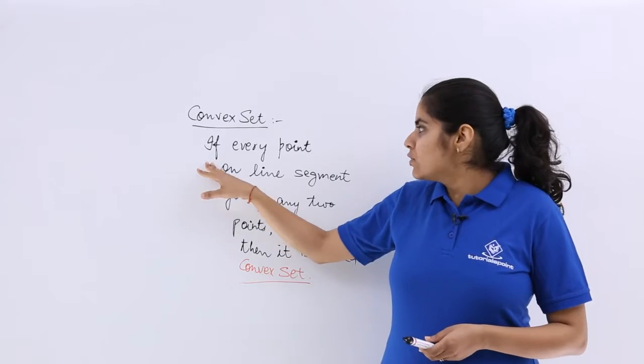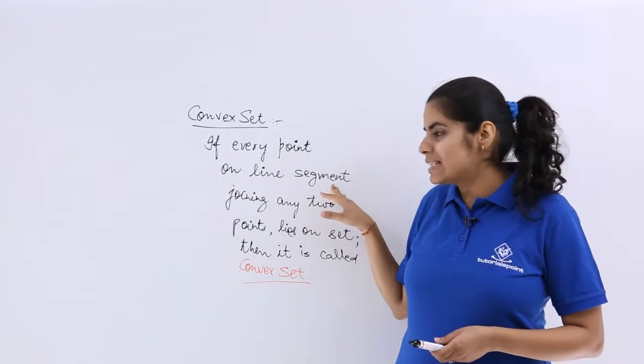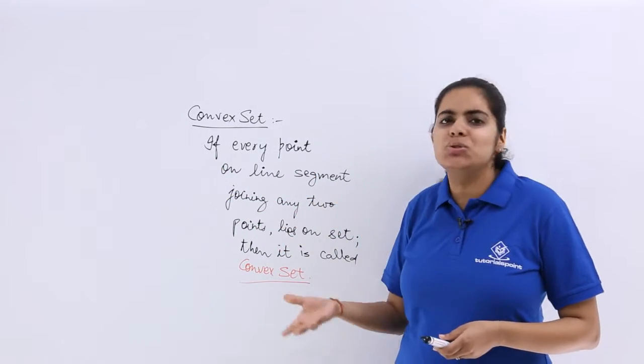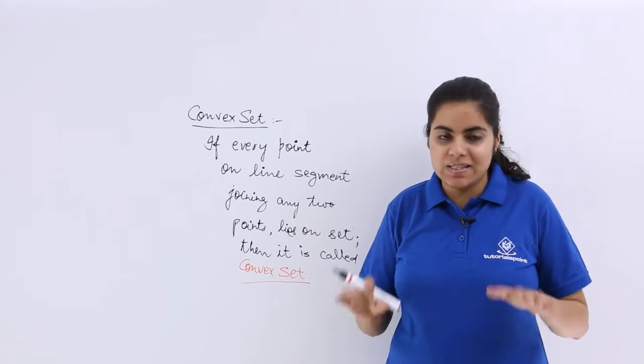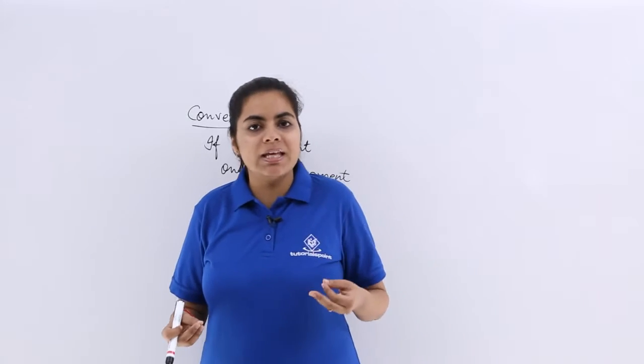First read the definition. It says if every point on the line segment joining any two points lies on the set, then it is called a convex set. Do not get confused, very simple wordings.